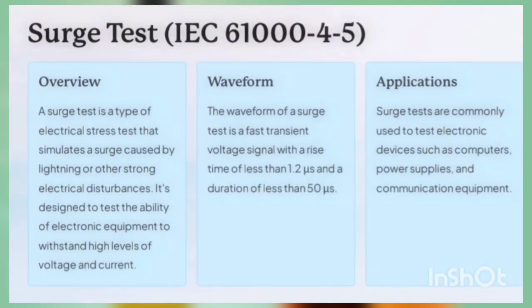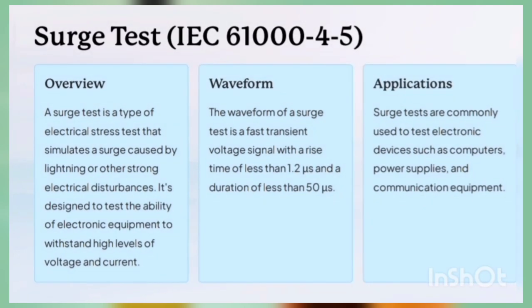Surge test is IEC 61004-5. I already explained about the surge in detail — you can check the description box for the link to the surge test video to get a full idea. A surge test is a type of electrical stress that simulates a lightning strike or other strong electrical disturbance, like capacitor bank switching. It is designed to test the ability of electronic equipment to withstand high levels of voltage and current. The waveform of a surge test is a fast transient voltage signal with a rise time of less than 1.2 microseconds and a duration of less than 50 microseconds. Surge tests are commonly used to test electronic devices like computers, power supplies, and communication equipment.